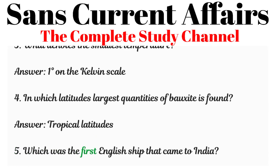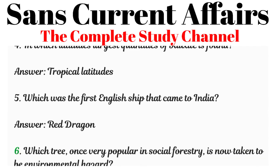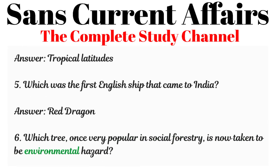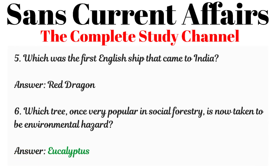Question 5: Which was the first English ship that came to India? Answered: Red Dragon. Question 6: Which tree, once very popular in social forestry, is now considered an environmental hazard? Answered: Eucalyptus.